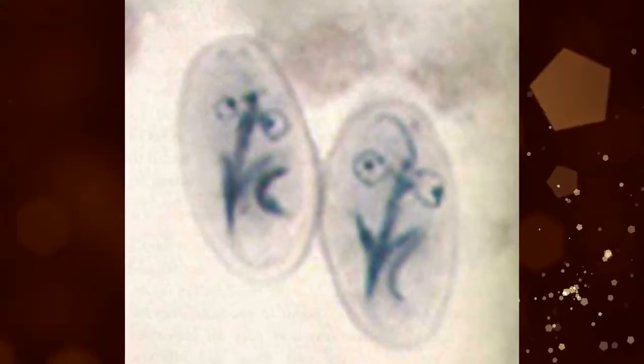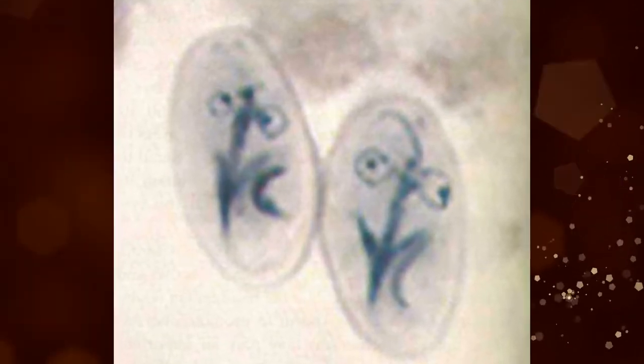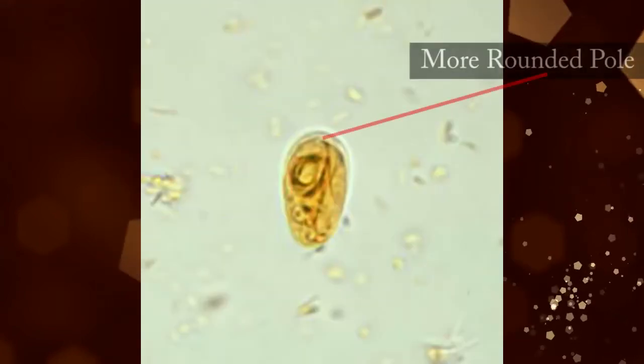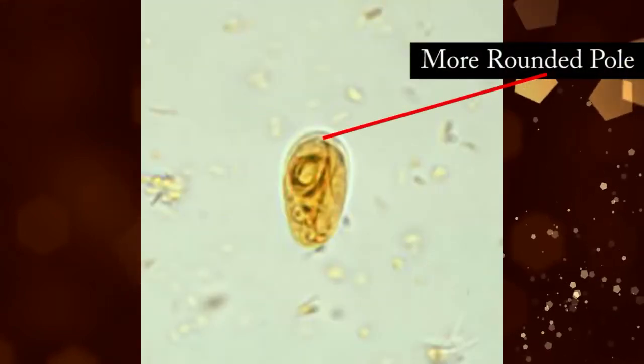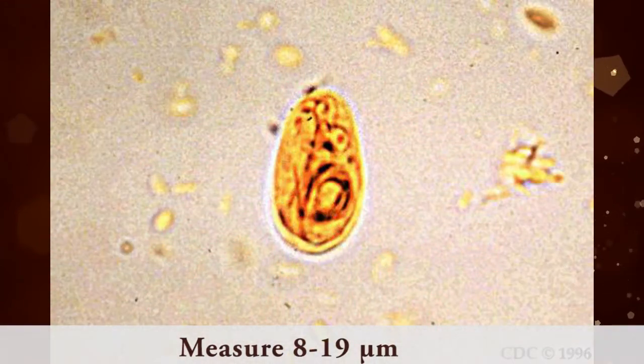Giardia cysts are oval to ellipsoid in shape, one pole more rounded than the other, and measure 8 to 19 micrometers.